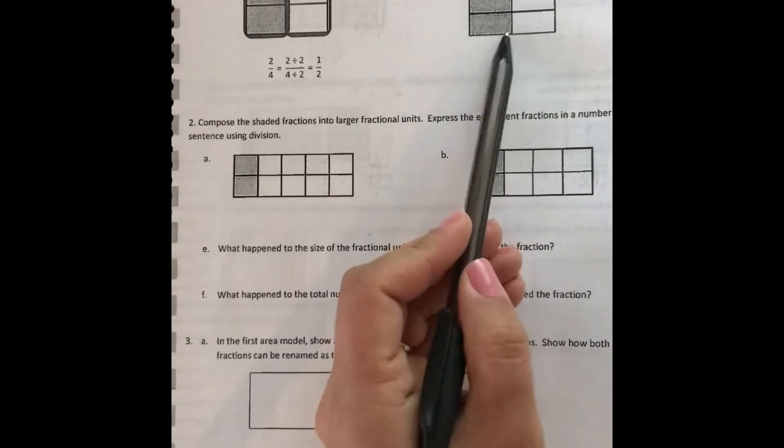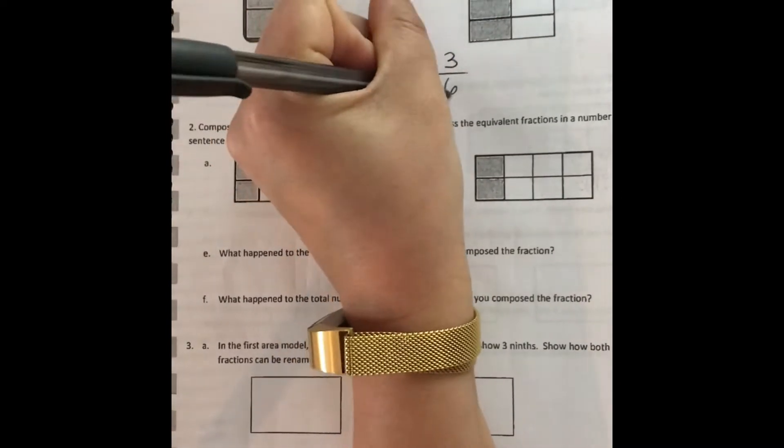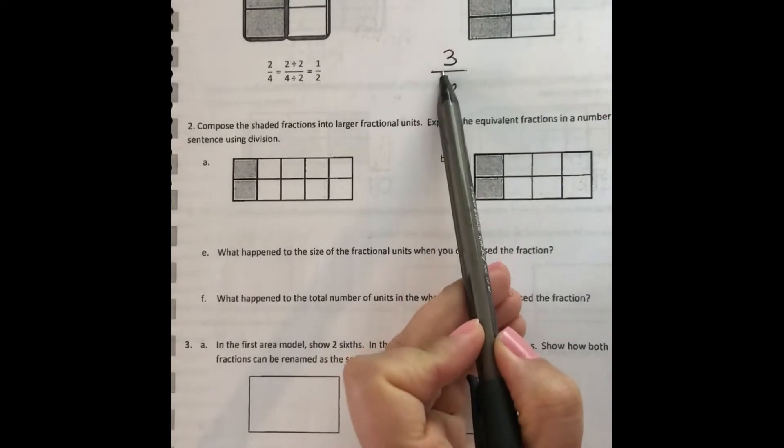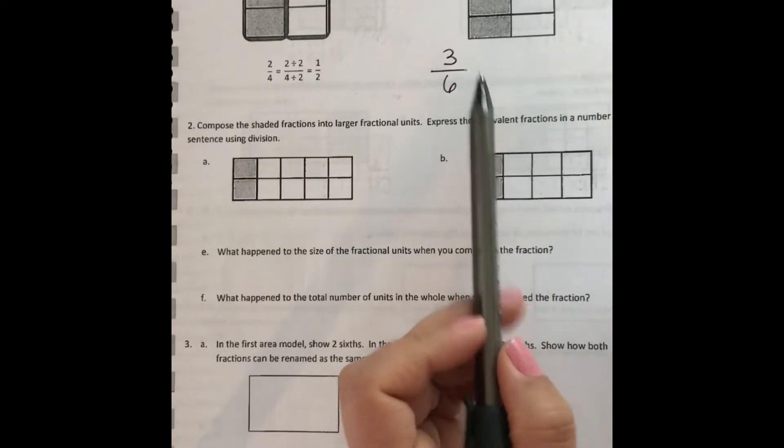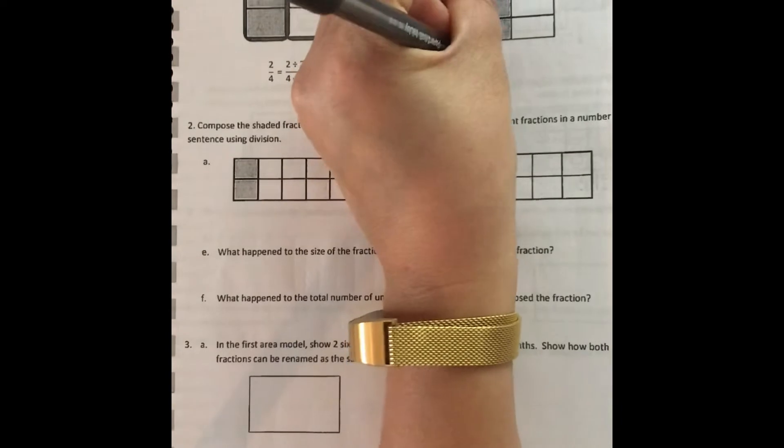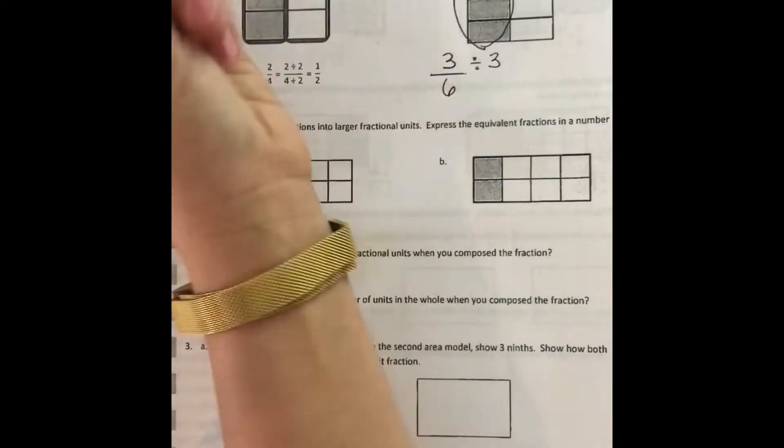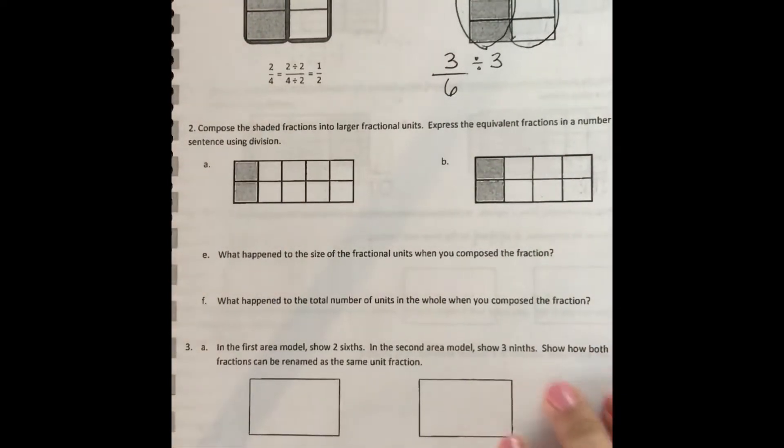Let's start this one here. We have one, two, three colored in out of two, four, six. So what we're going to do is we're going to see what we can divide it by. What I like to always try is whatever my numerator is. So let's see if we can divide by three. So if we're going to divide this by three, that means we're going to take groups of three. One, two, three. There's one group of three. One, two, three. There's two groups of three.